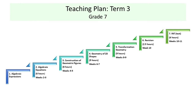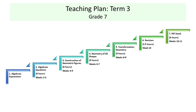Learners in grade 7 have now entered into the senior phase of their GET education. The topics they need to master are significantly different, but learners need to use the knowledge obtained in their previous grades. The maths topics covered in the intermediate phase provide the foundation needed for learners to expand their skills in grade 7. Term 3's topics are algebraic expressions, algebraic equations, construction of geometric figures, geometry of 2D shapes, transformation geometry, revision, and formal assessment.